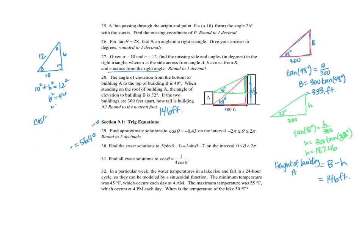I want to solve some trig equations and find approximate solutions on the interval from negative 2 pi to 2 pi, rounding to two decimal places. The first thing I do is find the inverse cosine in my calculator of negative 0.43, making sure my mode is switched to radians. Cosine inverse of negative 0.43 gives me 2.015, which rounds to 2.02.